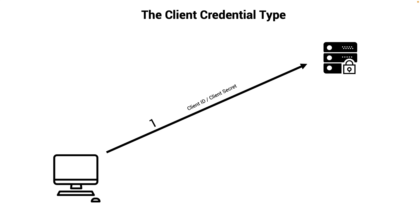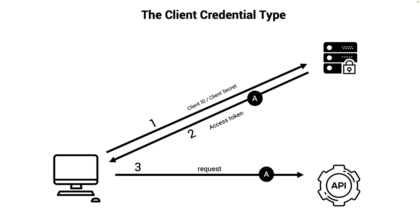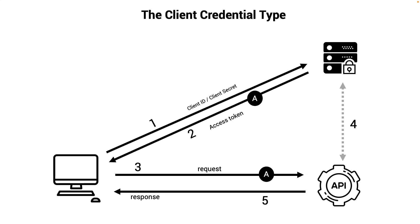Now let's get into the last type: client credentials. This is typically server-to-server communication. You have your client_id and secret, pass them to the authorization server, and get back an access token. Since this is server-to-server, you can safely keep the secret. Once you have the access token, you can make API calls and once validated, you receive the response.